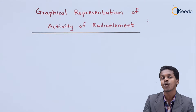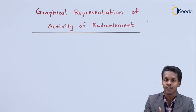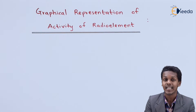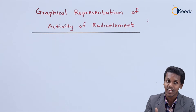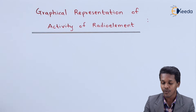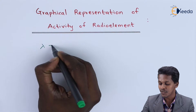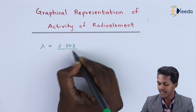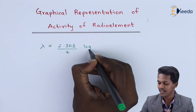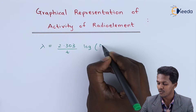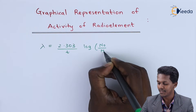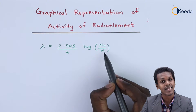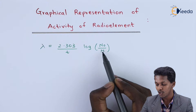So friends, here we are going to talk about how we can represent the graphical representation for the activity of a radio element. But for that we should understand what is the equation for the decay constant. So the equation for the decay constant is: lambda is equal to 2.303 divided by t, log to the base 10, N₀ divided by N. Where t is the time duration in which this change has occurred, that is from N₀ to N.